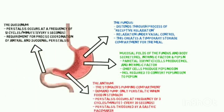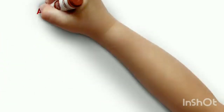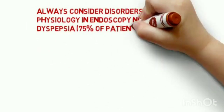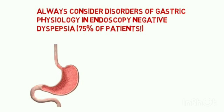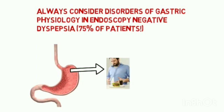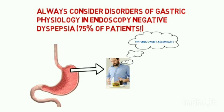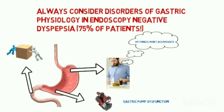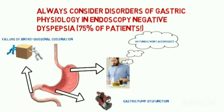Always consider disorders of gastric physiology in endoscopy-negative dyspepsia, which accounts for 75% of patients. In the fundus, dysfunction occurs because the fundus cannot accommodate the meal. At the antrum level, gastric pumping is dysfunctional. At the duodenum level, there is failure of gastric and duodenal coordination.